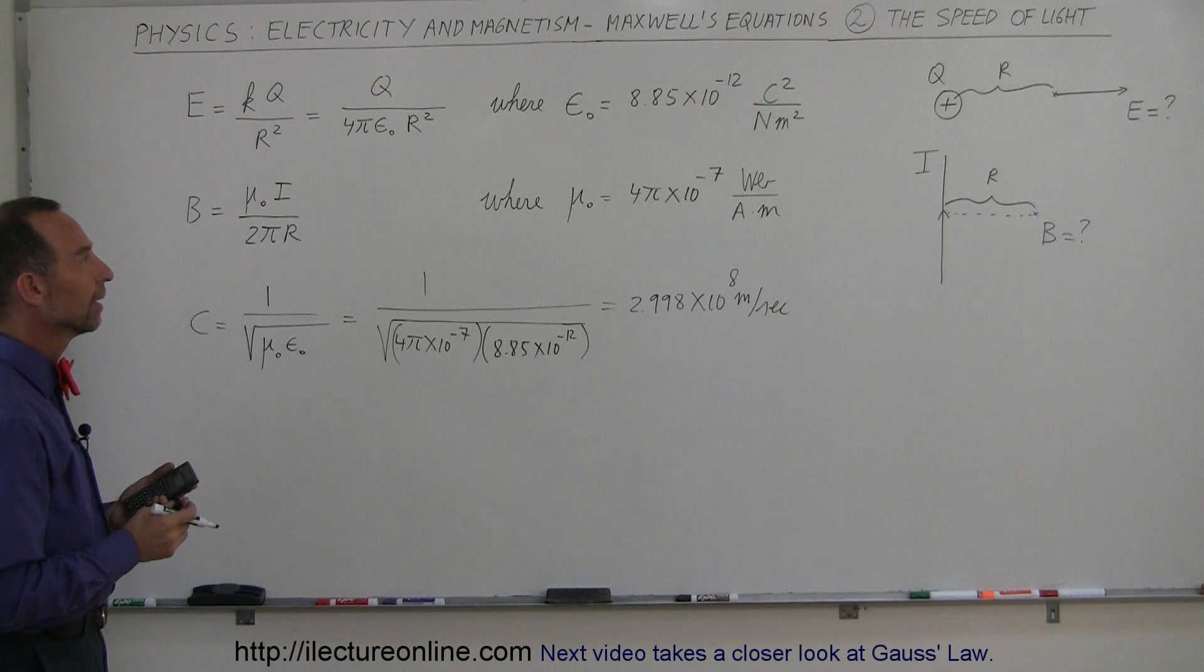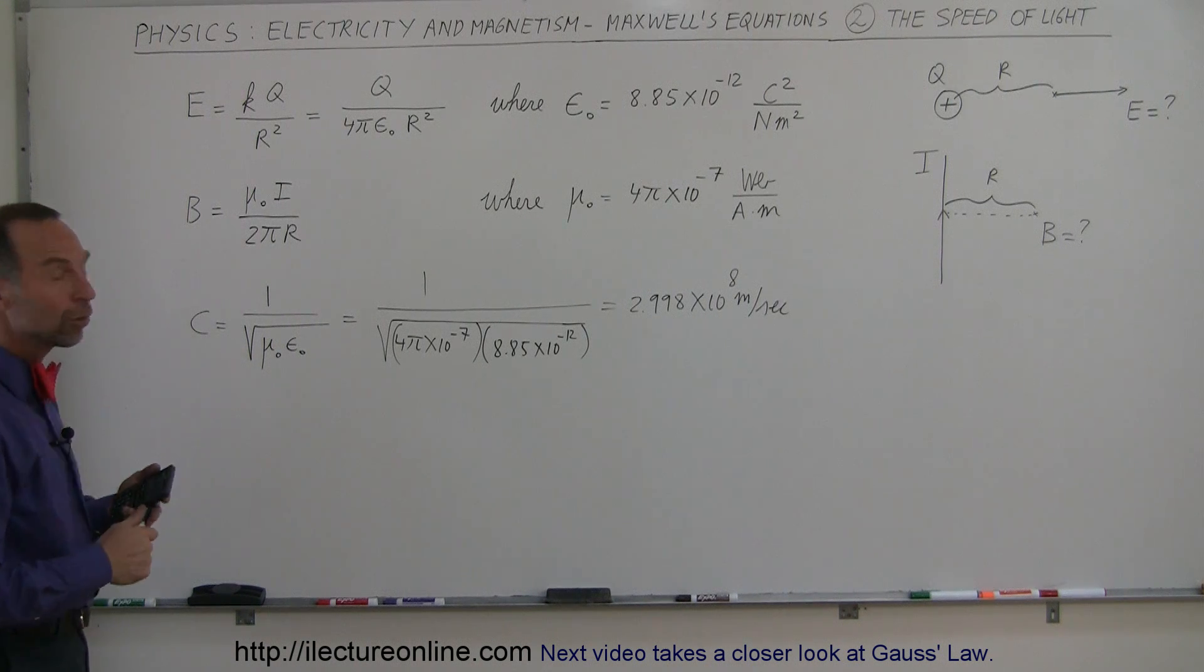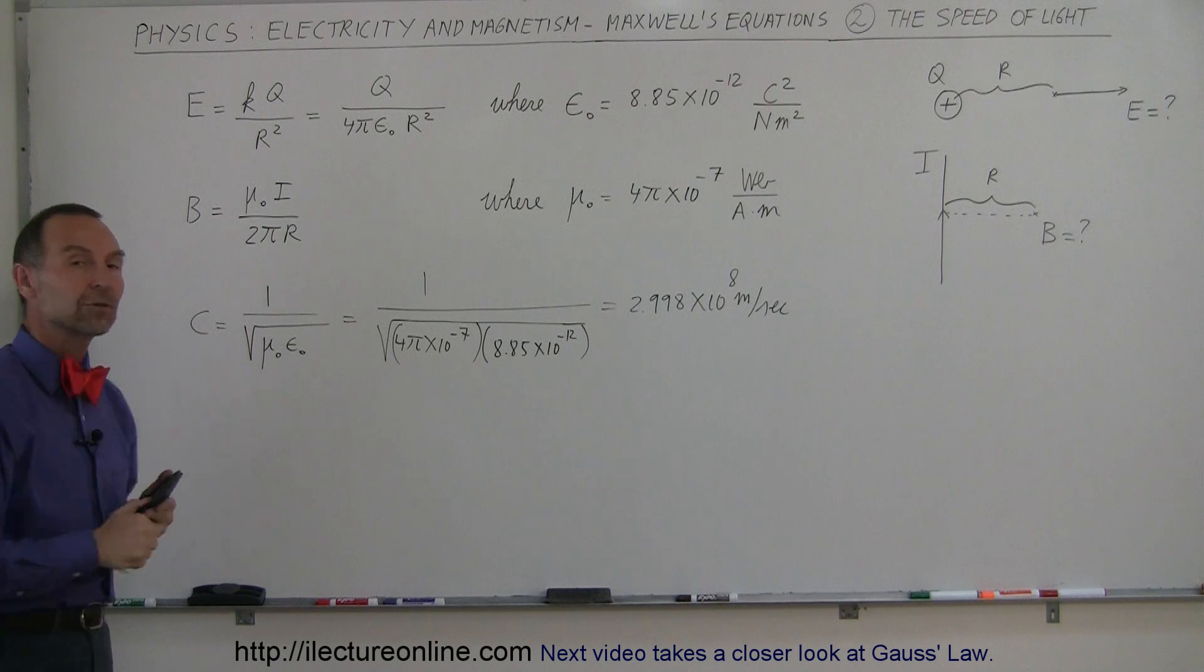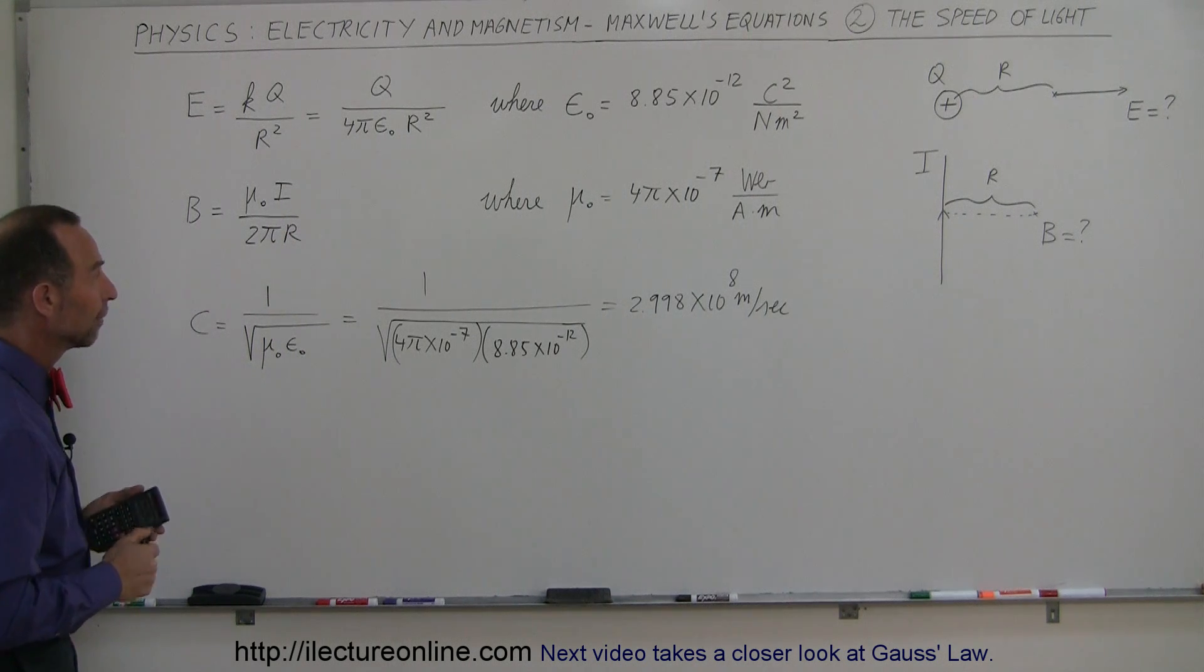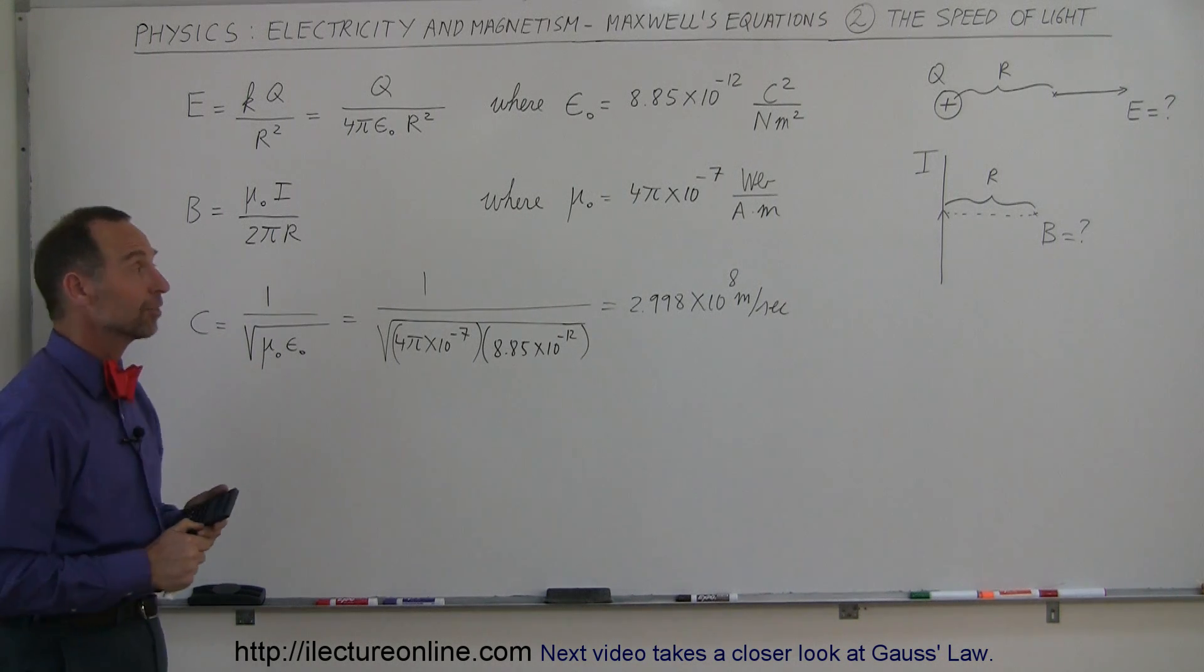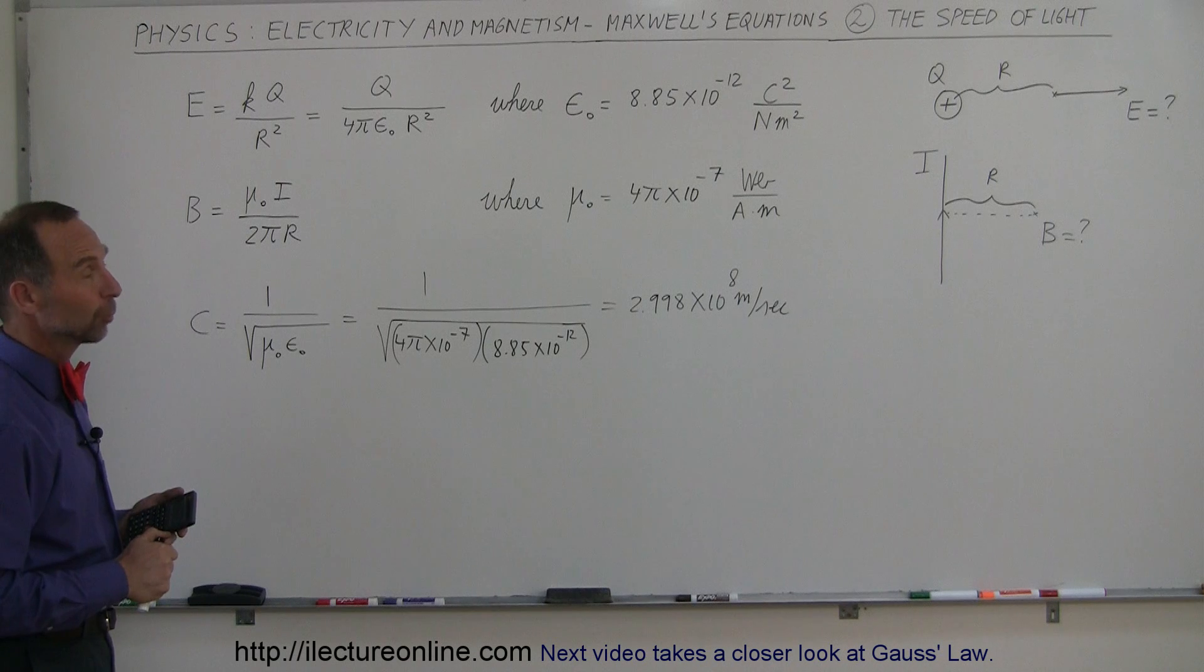An amazing discovery by Maxwell, realizing what those two constants mean that we use all over electricity and magnetism equations, because those determine how things interact with each other in the universe, and also determine the speed at which light can move through space. Pretty amazing. One of the great discoveries.